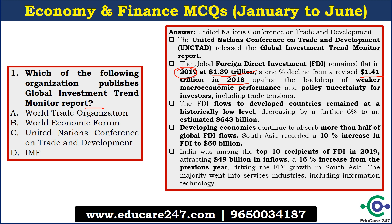This decline happened because of global weak macroeconomic indicators. The China-US trade war led to uncertainty around the world, and policy uncertainty in many countries also contributed to lower FDI flows. For developed countries, FDI was at a historically low level, declining by 6%. For developing countries, which account for more than half of FDI flow, the picture is relatively better. In India, FDI increased by 16% and overall FDI was $49 billion in 2019.